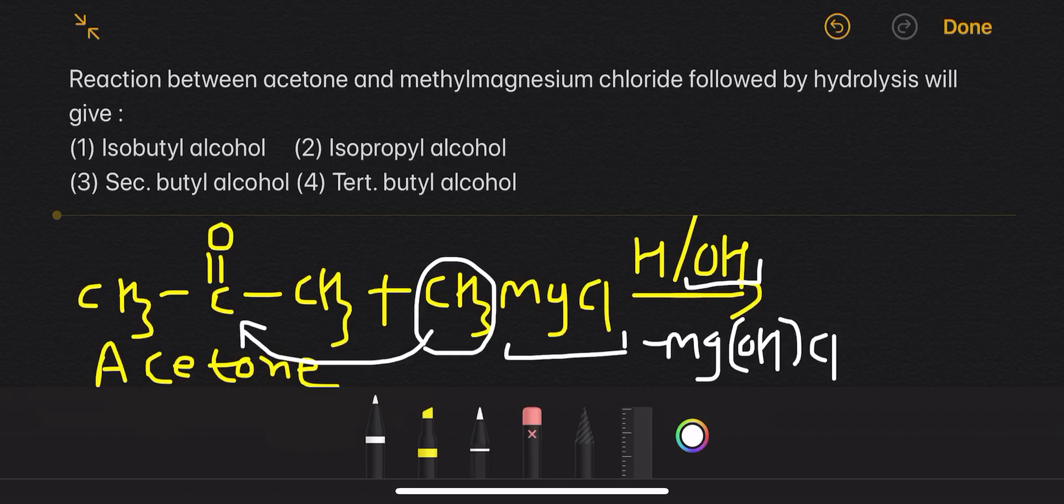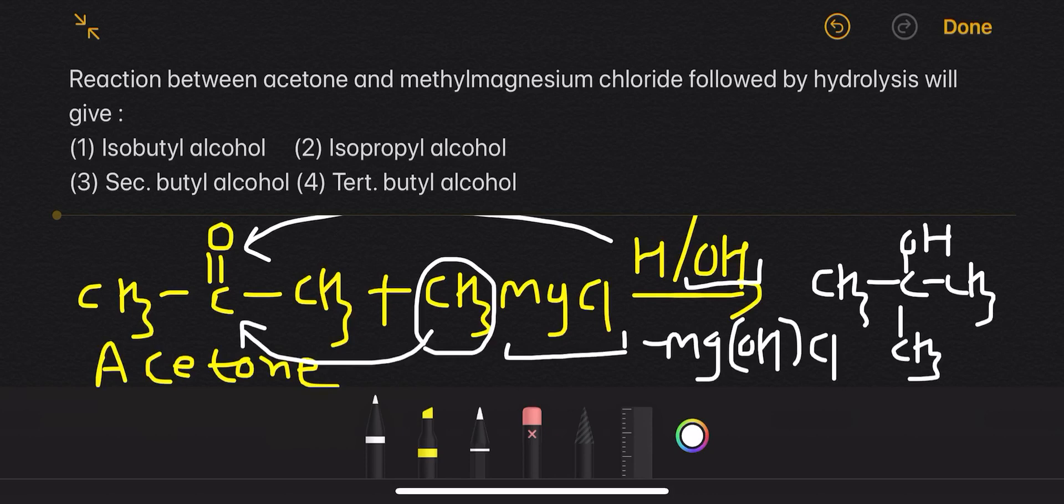H+ will attach to the oxygen, giving the final product CH3C(CH3)(CH3)OH. The product is tertiary butyl alcohol, so the answer is option 4: tertiary butyl alcohol.